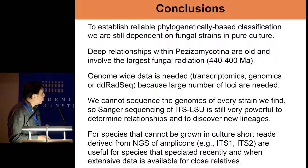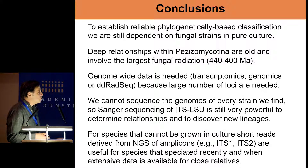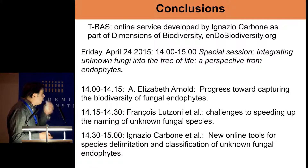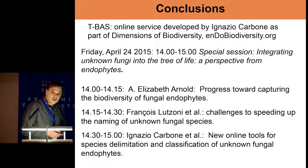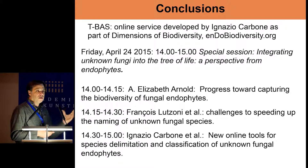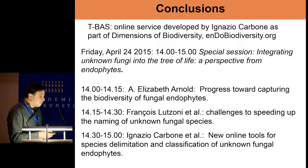For species that cannot be grown in culture, short reads from next-gen sequencing of amplicons targeting ITS-1 and ITS-2 are useful for species that speciated recently and when extensive data is available for close relatives. We need to integrate all this information, which comes in all kinds of forms and shapes and in different amounts.